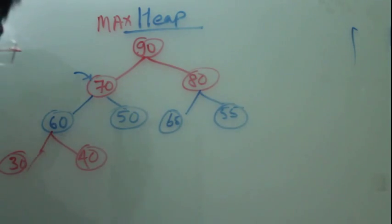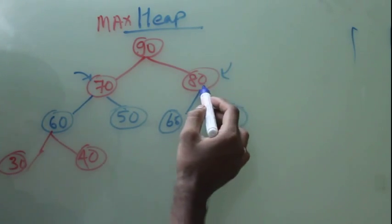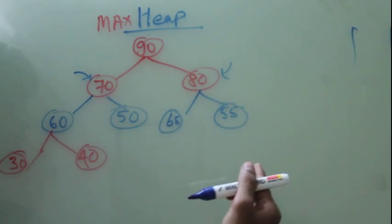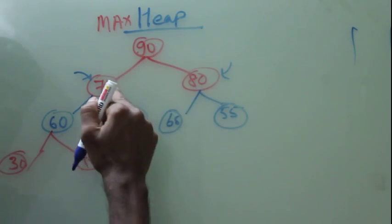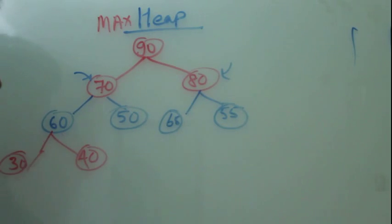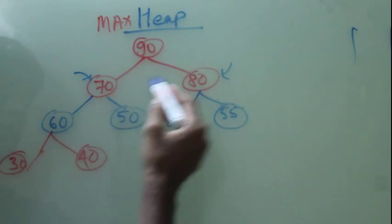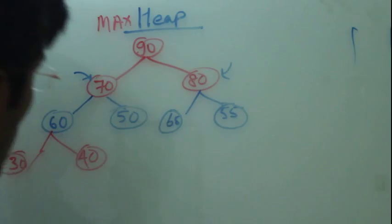So at any level, from 80 it is greater than 65 and 55, so it follows the rule. 90 is greater than 70 and 80, so it follows the rule. 90 is greater than 70 and greater than 80, and it's a binary tree.